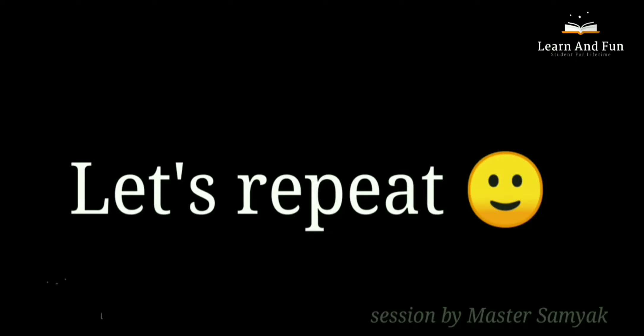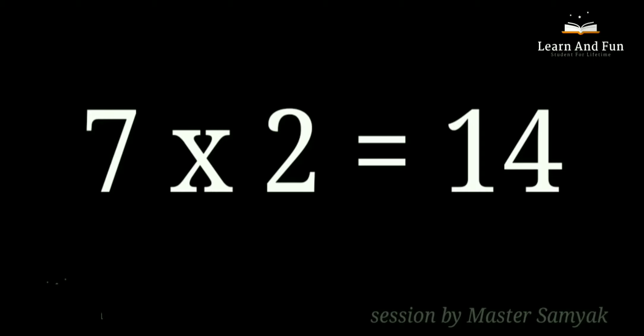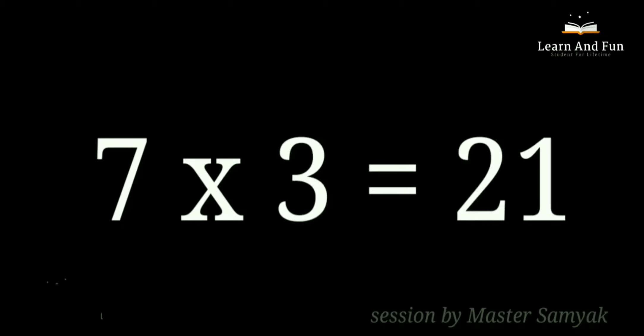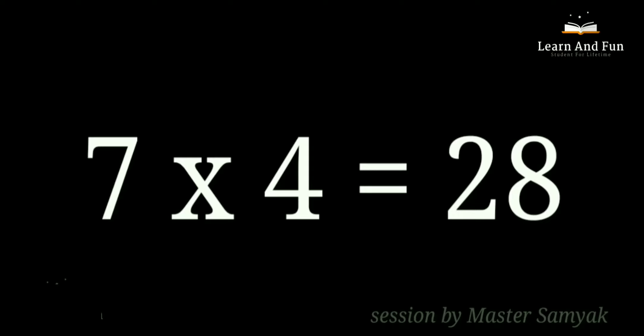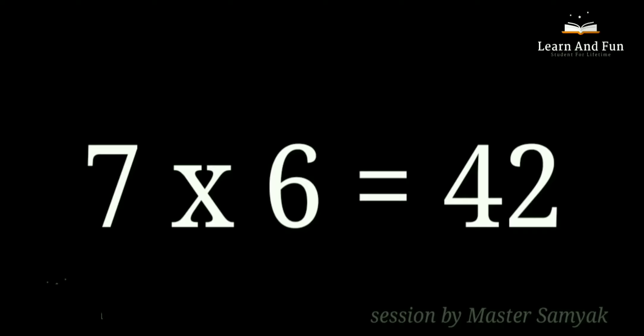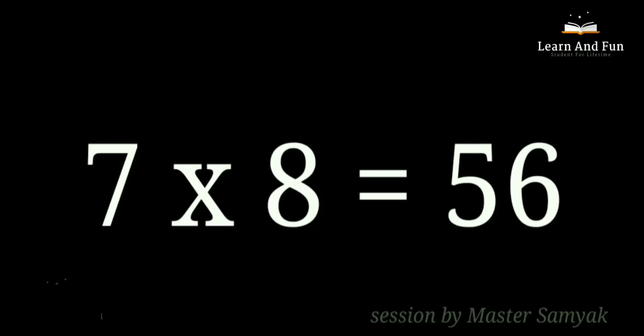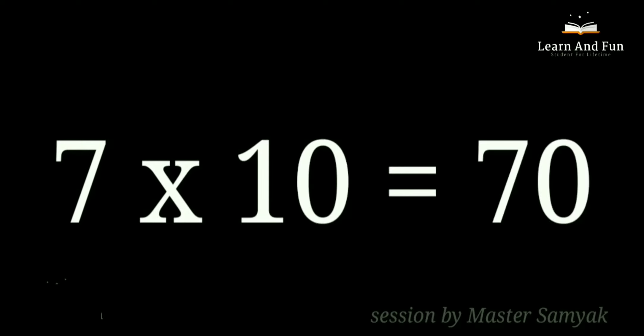Let's repeat. 7 ones are 7. 7 twos are 14. 7 threes are 21. 7 fours are 28. 7 fives are 35. 7 sixes are 42. 7 sevens are 49. 7 eights are 56. 7 nines are 63. 7 tens are 70.